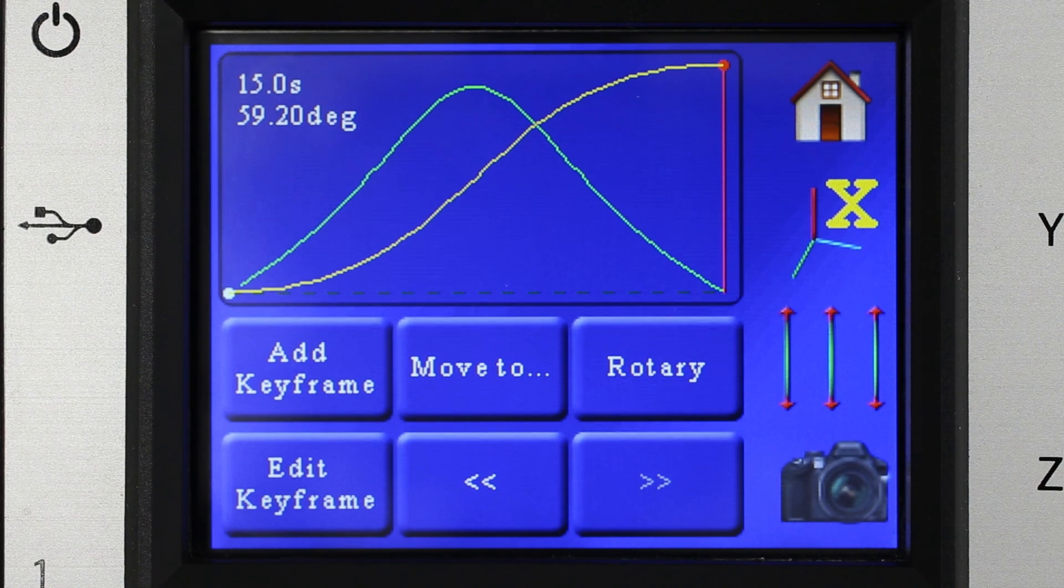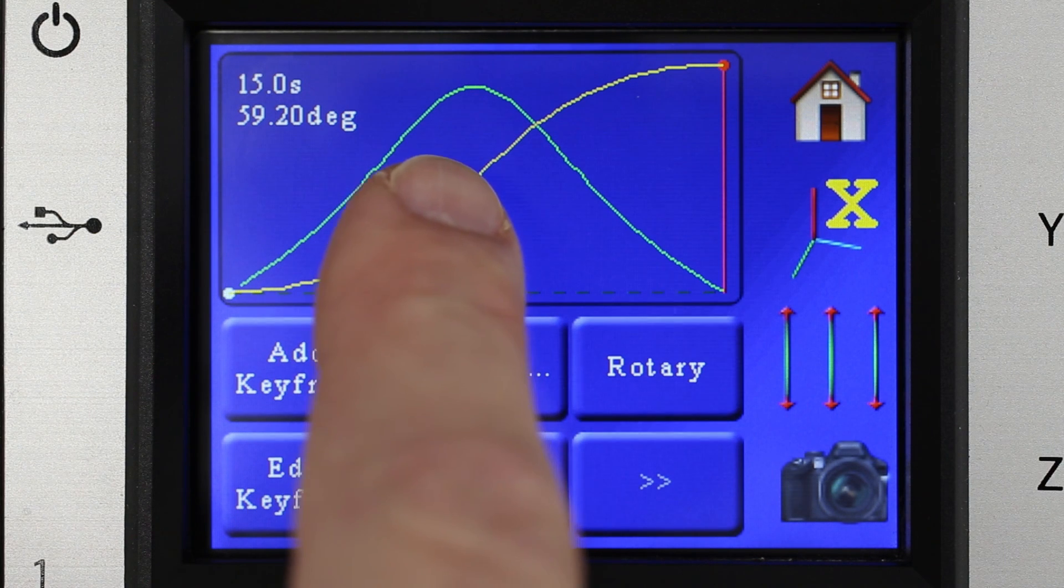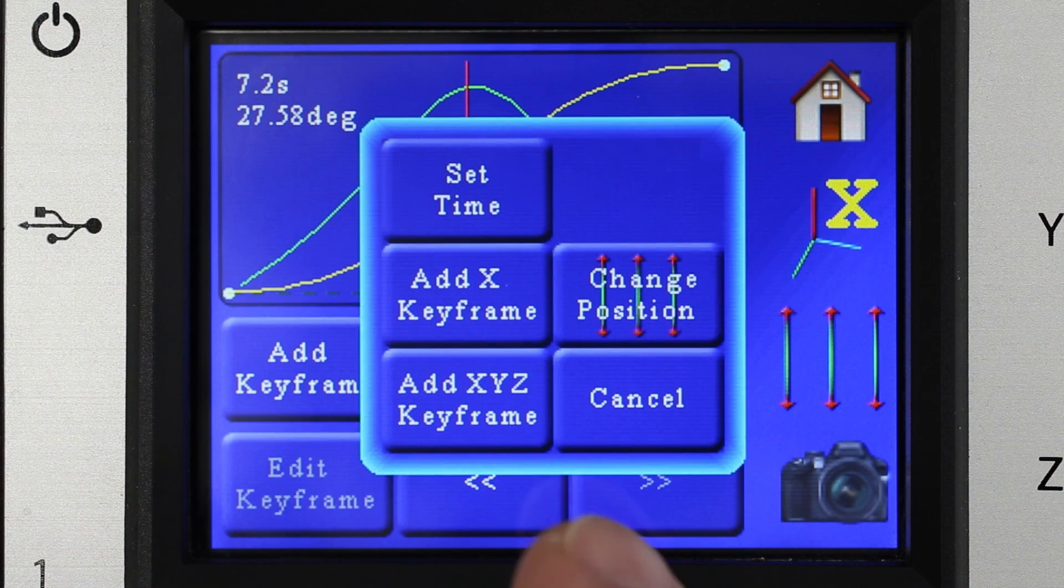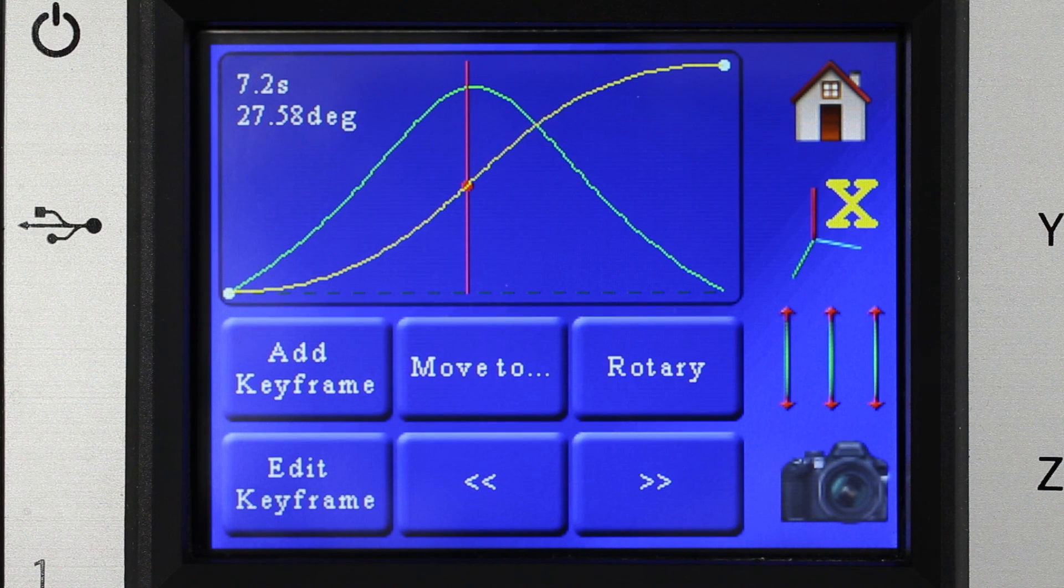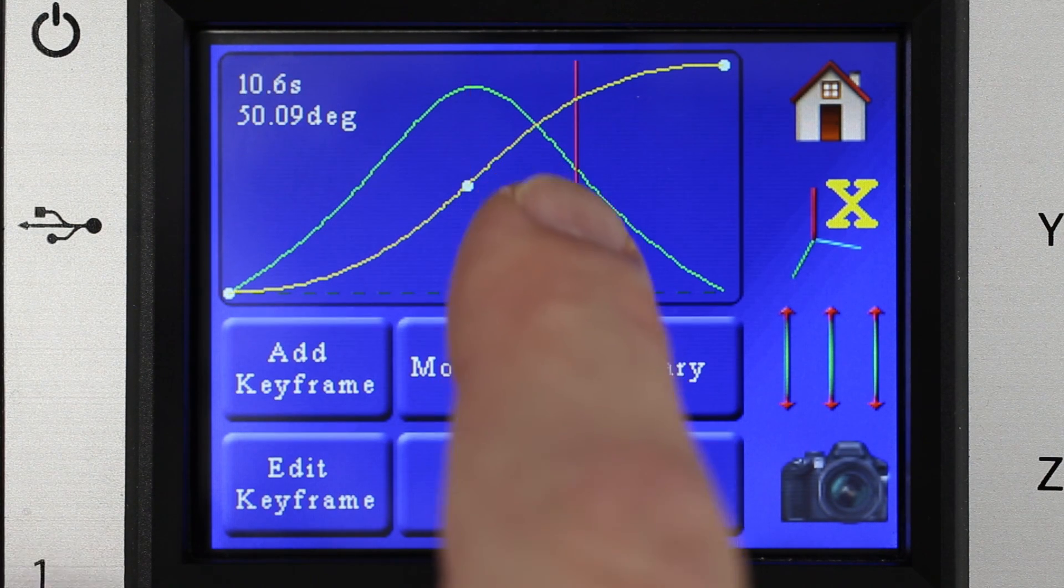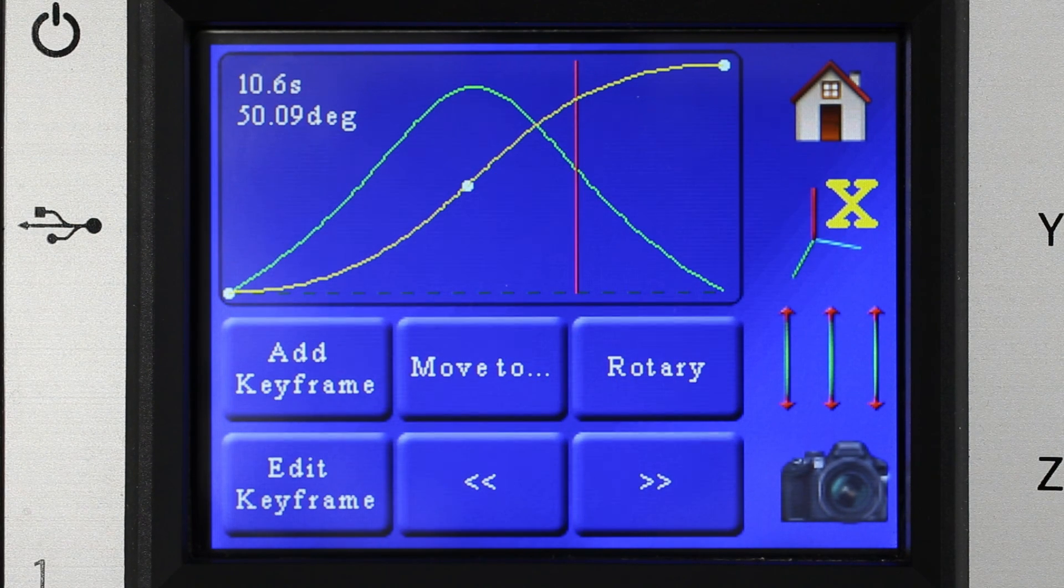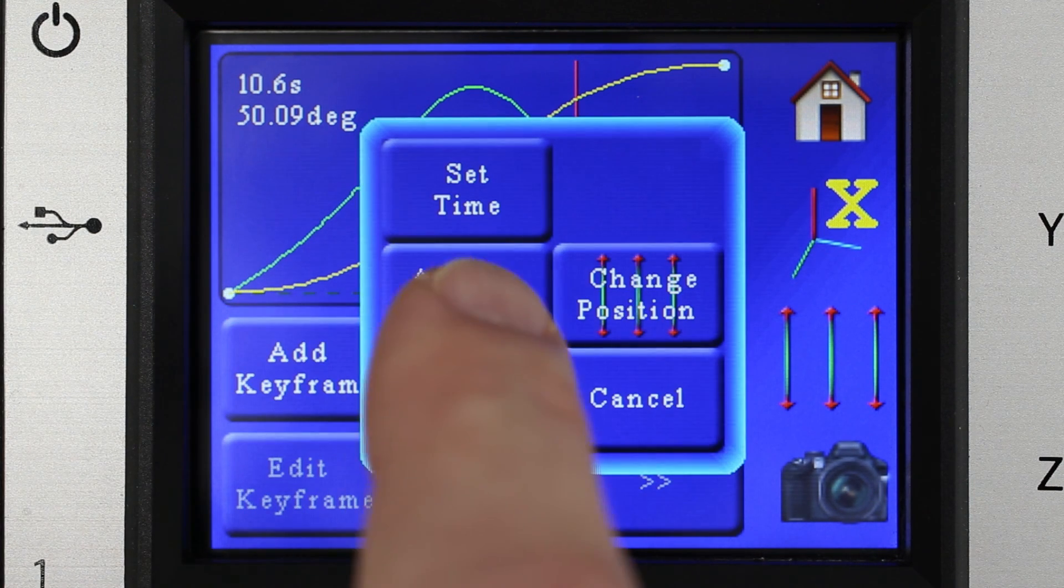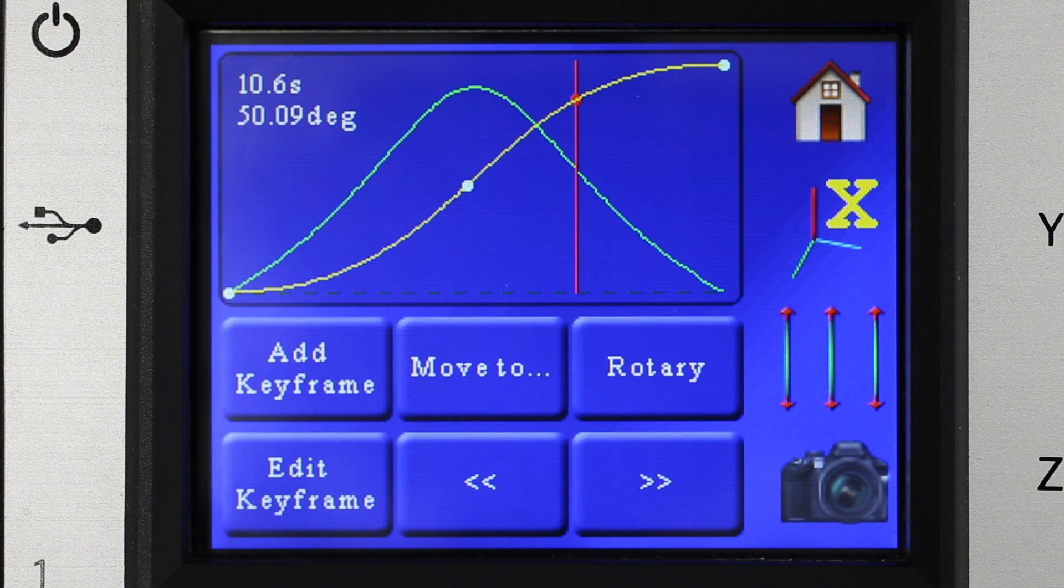So why would you want to add a keyframe? Well you can have up to five keyframes and one of the reasons is to tweak the position slightly at a given point. Let's say you want some dwell time. So between this position here we're going to move the playhead there. We're going to add a keyframe at that position and add a keyframe at X and we're going to move over here. We're going to add a keyframe at X. So now we have two keyframes there.